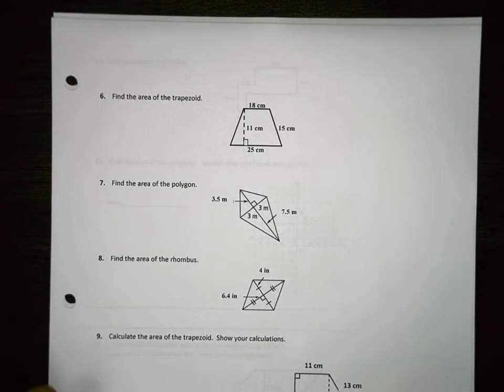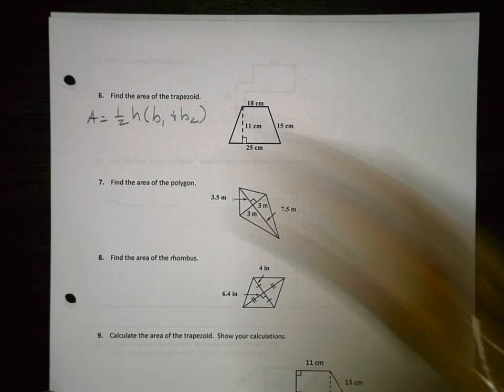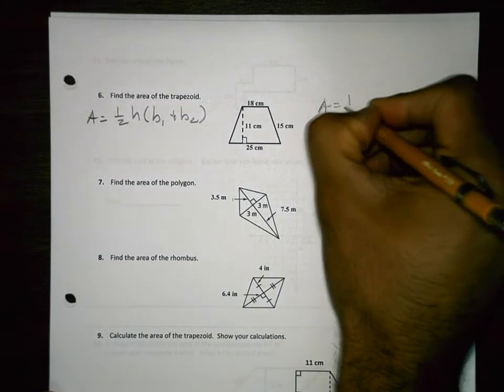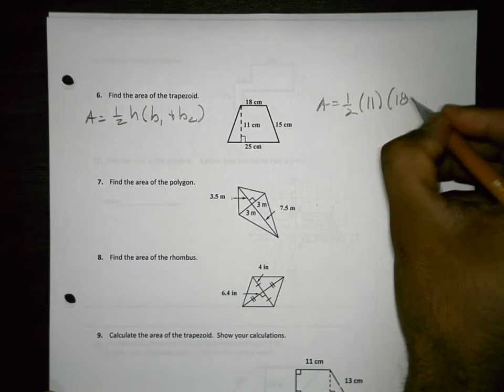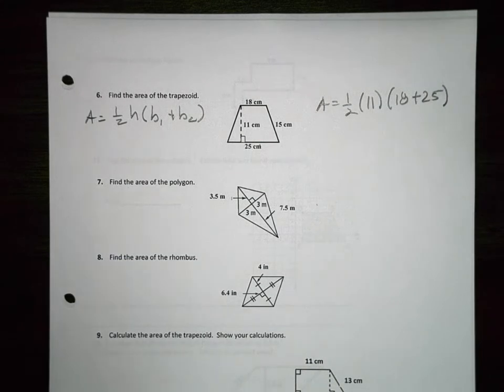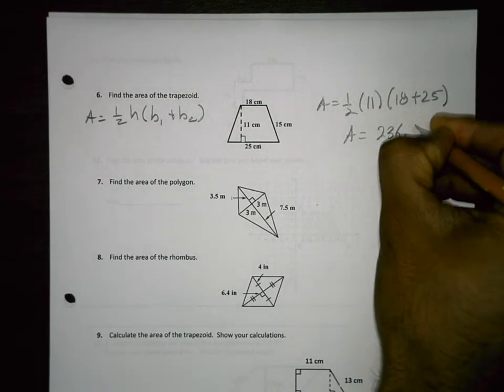Find the area of the trapezoid with our formula being 1/2 the height times the sum of the bases. We got A equals 1/2 times the height, which is 11. The bases are 18 and 25. We don't need this 15 over here. So 18 plus 25 is 43 times 11 divided by 2. And the area equals 236.5.